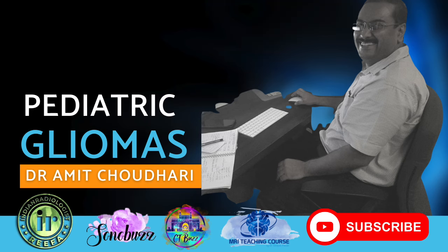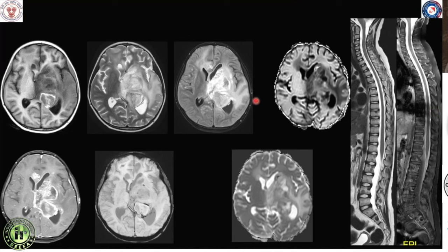This is a case-based approach to pediatric diffuse gliomas. A young child presented with symptoms of raised intracranial tension and seizures. The imaging includes T1 plain, T2, FLAIR, post-contrast, diffusion, ADC map, and gradient sequences. There is a large tumor in close proximity to the midline involving the thalamus and basal ganglia, with T1 hyperintensity indicating hemorrhage within the tumor. There is also sulcal enhancement along the sylvian fissure and parieto-occipital fissure, implying CSF seeding.